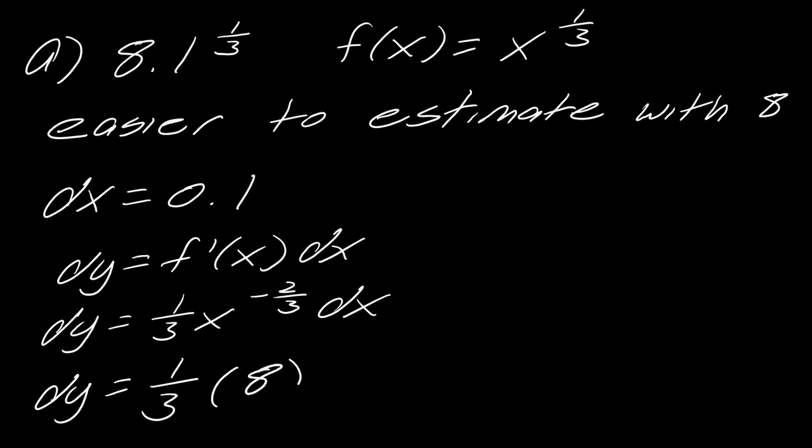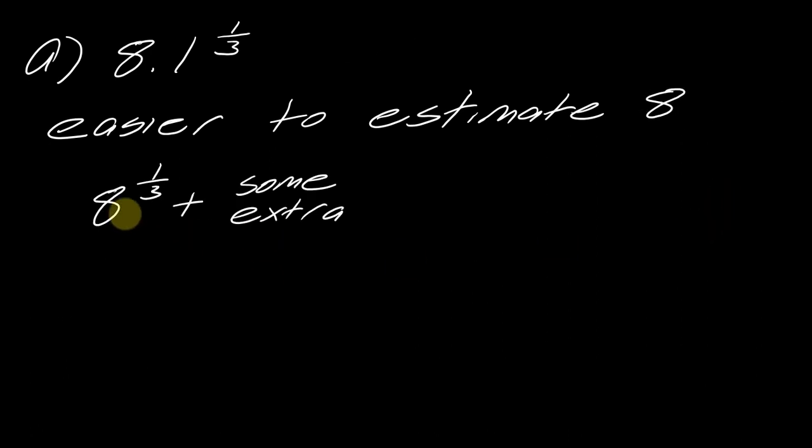So if I plug all of this in, and then this times 0.1, I get 1 over 12 times 0.1, which is a very tiny number, 0.00833 and some change. Okay so now if I want to do this estimation, so going back to this idea that it's estimating 8 and 1/3 and then having a little bit extra left over, this will be 2 plus that 0.0083, so that would be my estimate by using differentials.